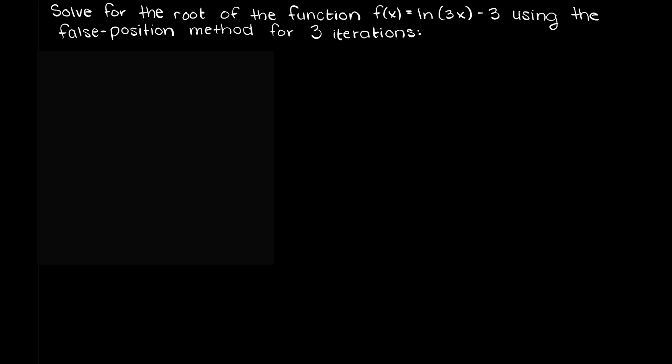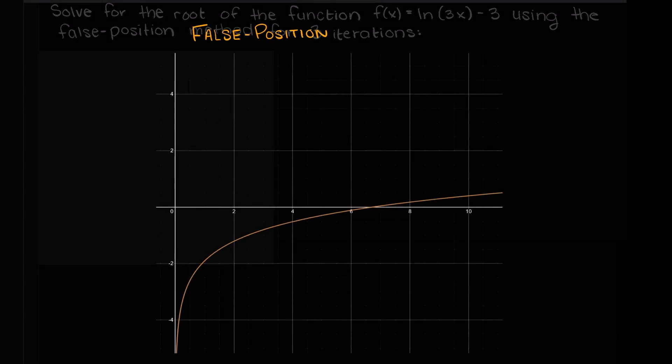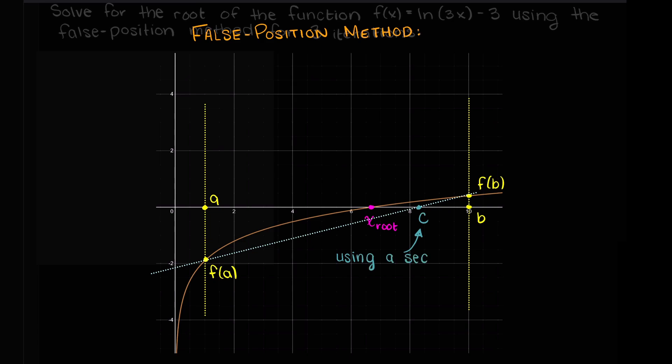Briefly, the false position method is a closed method nonlinear numerical method, much like the bisection method we learned about previously. It is a way of finding the roots of a nonlinear function. If you missed the theory video on the false position method, I will leave a link in the description down below for you to check that out. However, let's just briefly talk about the steps here.